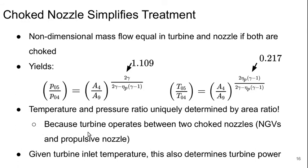This is because the turbine operates between two choked nozzles: the nozzle guide vanes in the turbine and the propulsive nozzle at the engine exit. This means that given the turbine inlet temperature, we can directly determine the turbine power.